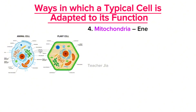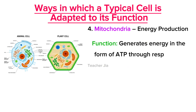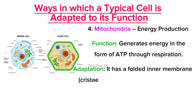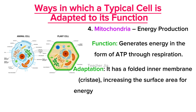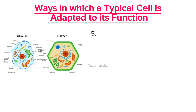Next is the mitochondria, which is involved with energy production. Its function is that the mitochondria generates energy in the form of ATP through respiration. Its adaptation is that it has a folded inner membrane known as cristae, increasing the surface area for energy production processes like oxidative phosphorylation.